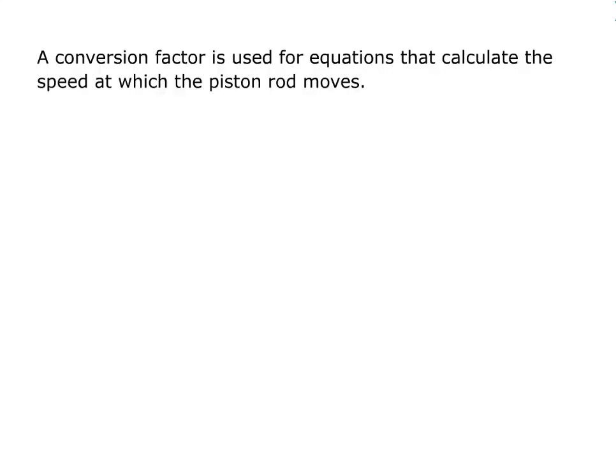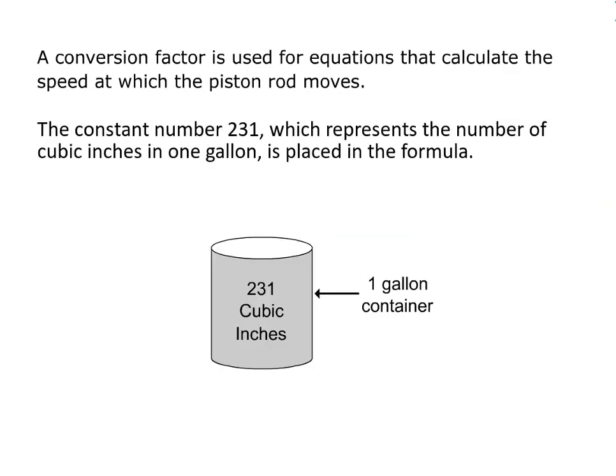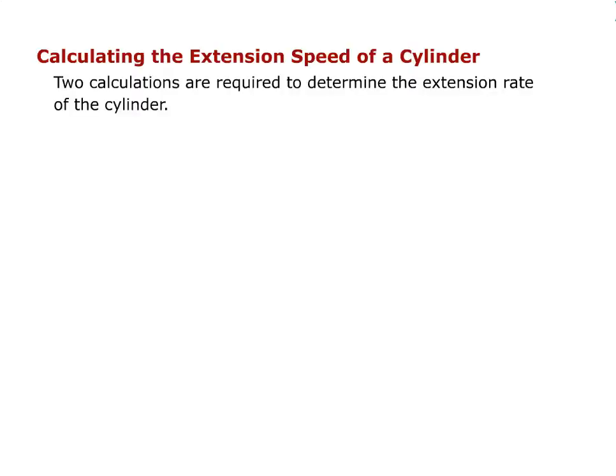A conversion factor is used for equations that calculate the speed at which the piston rod moves. The constant number 231, which represents the number of cubic inches in one gallon, is placed in the formula. Two calculations are required to determine the extension rate of the cylinder.